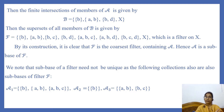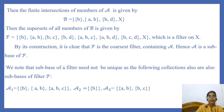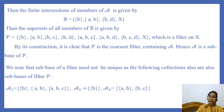We note that a sub-base of a filter need not be unique, as the following collections are also sub-bases of filter F. If we take collection A1 containing singleton {B}, doubleton {A, B}, and the set {A, B, C}, this will also generate the same filter F. Even if we consider A2 which contains just singleton {B}, we get filter F because F contains all supersets of singleton {B}. Similarly, the collection A3 containing doubleton {A, B} and doubleton {B, C} also generates the same filter F. So a sub-base need not be unique.